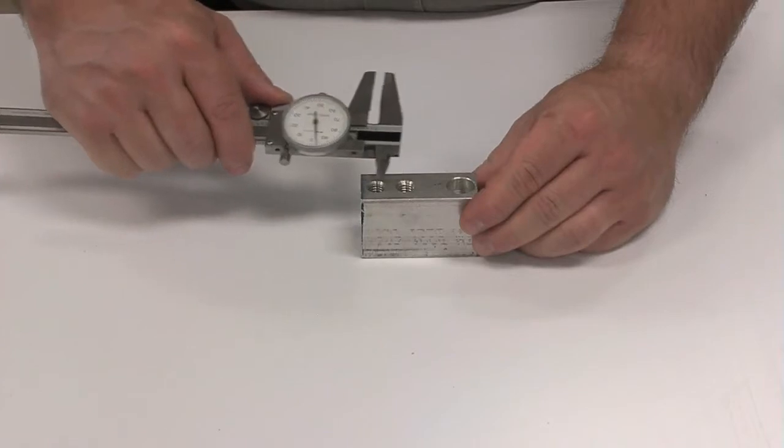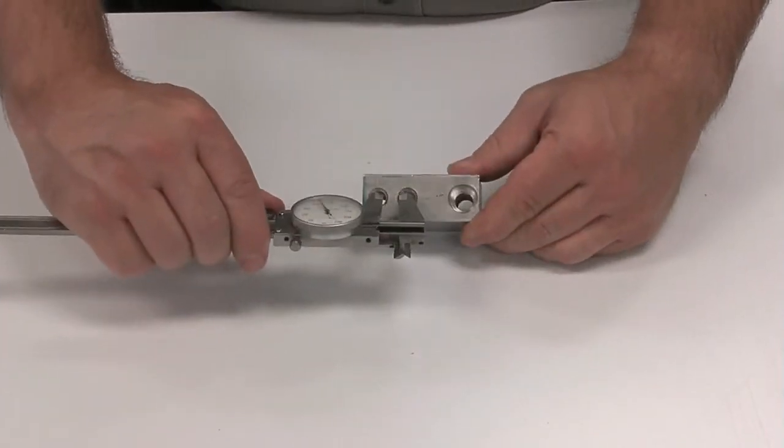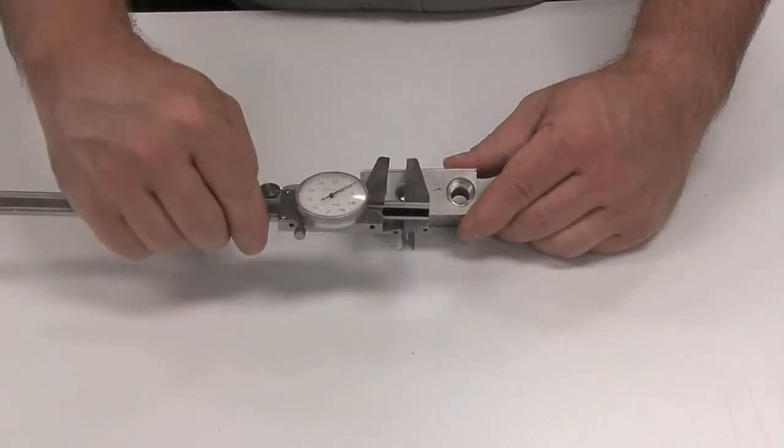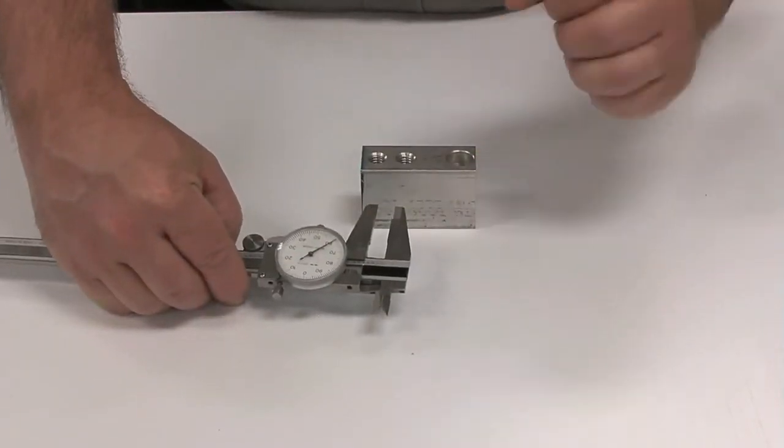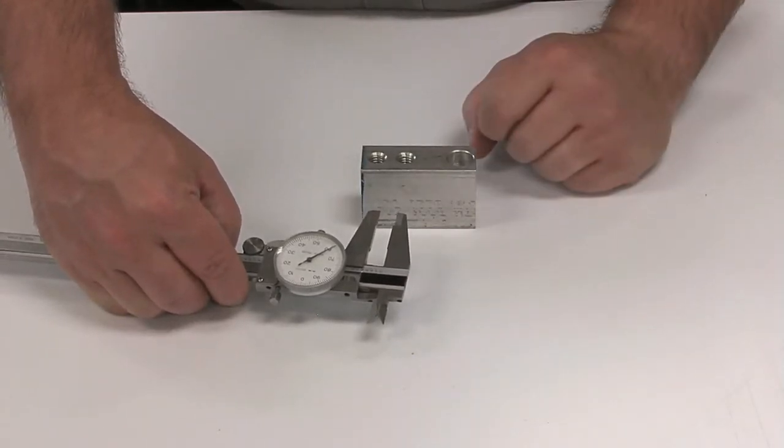The same thing works between two holes. We measure this distance and add the radius of each hole to that measurement. This gives us an exact measurement instead of trying to eyeball where the center line is.